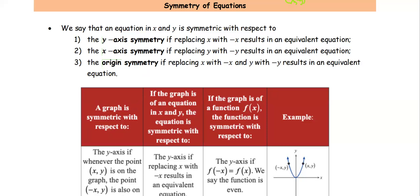Symmetry of equations. We're going to look at the symmetry of the equation in x and y in three different cases. The first case is when the equation in x and y is symmetric with respect to the y-axis — when we replace x with a negative x, it results in an equivalent equation.